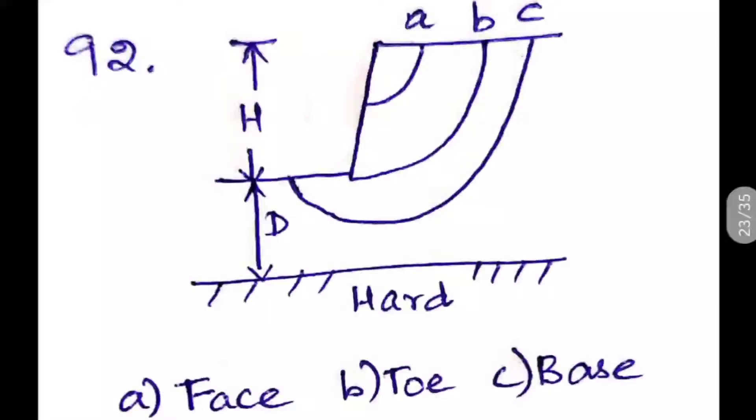So here the diagram representing the soil failure is given here. So the height is the height of the embankment or the soil above the ground level and D is the height of the hard stratum below the ground level. So it is H and D.